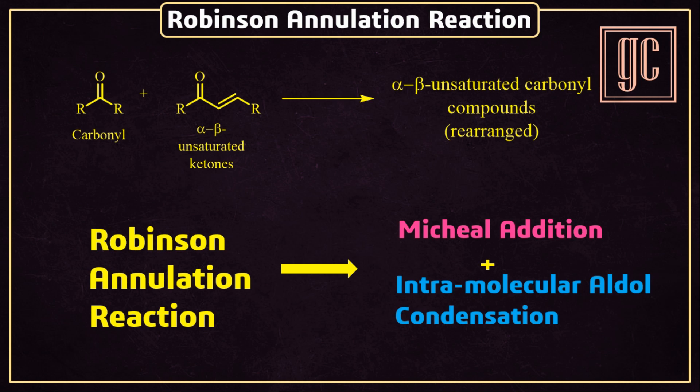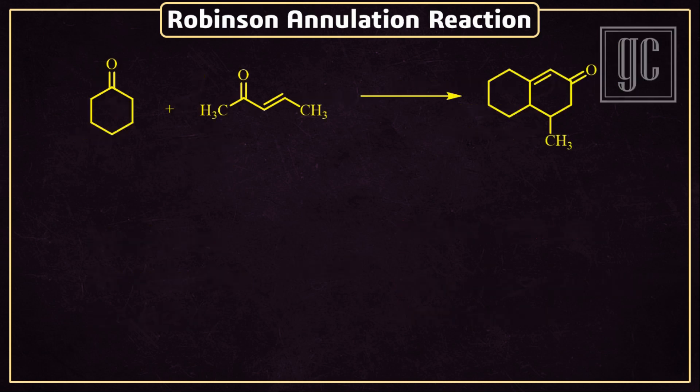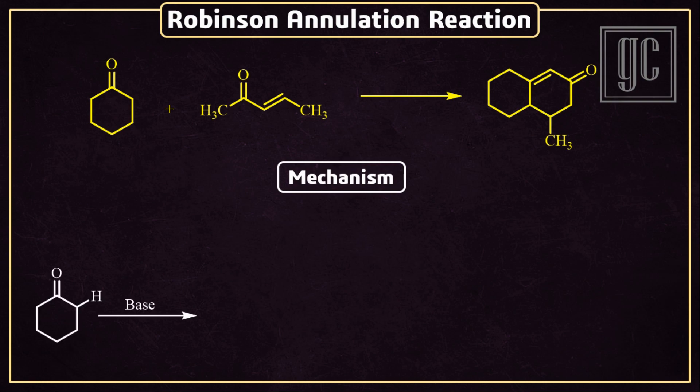To explain the mechanism of the reaction, here we are taking cyclohexanone and methyl-2-butanone as an example. The final product is a rearranged and condensed alpha-beta unsaturated ketone. Now we are going to discuss the mechanism of this reaction.